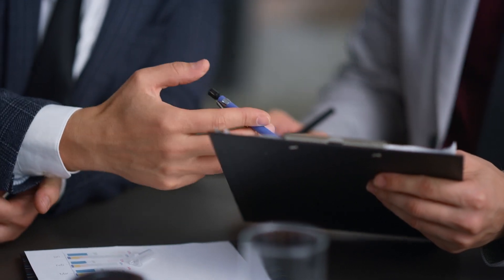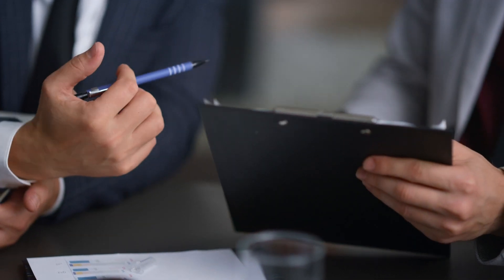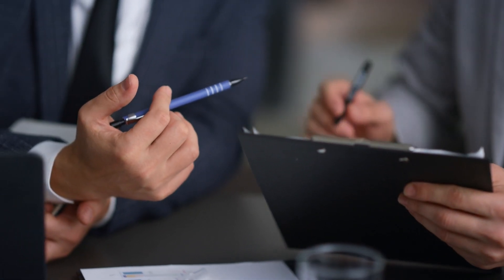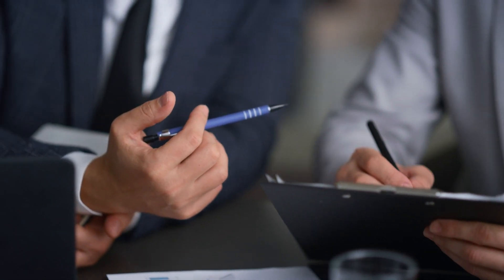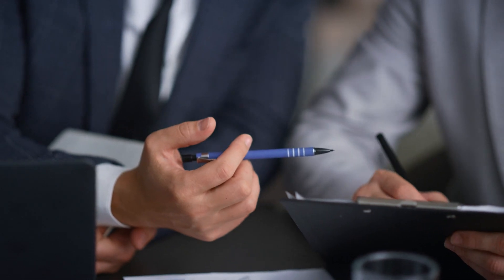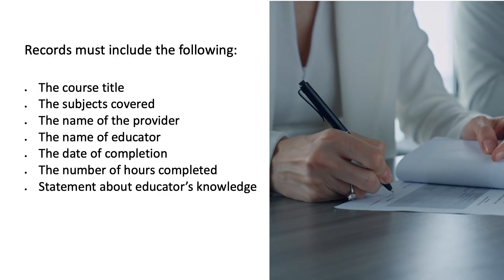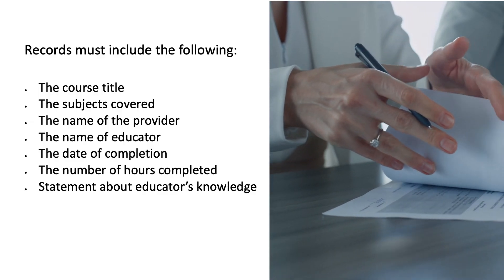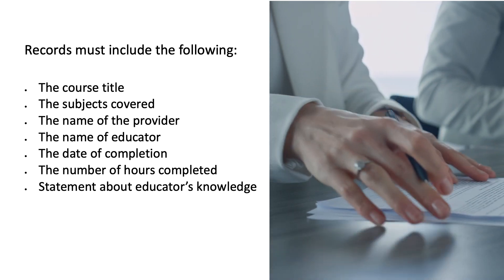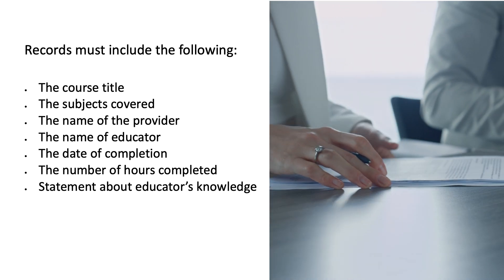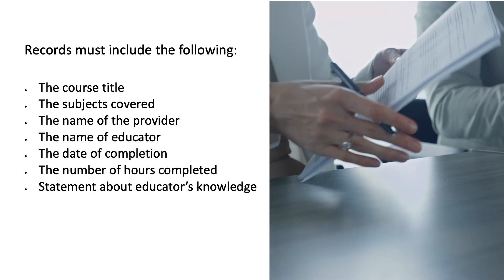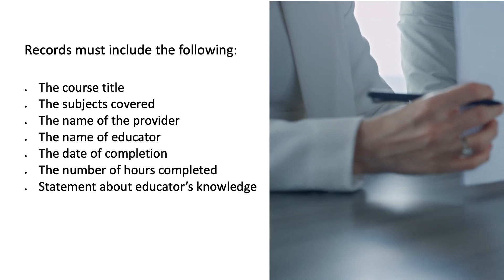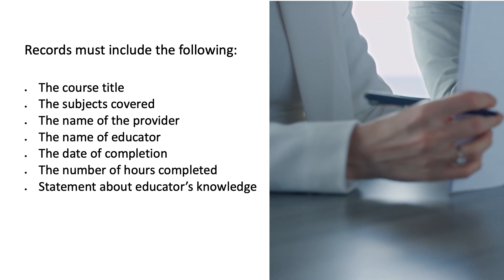What documentation should architects maintain in case of an audit by the California Architects Board? Architects must maintain records that document completion of the required coursework, such as a certificate of course completion or course transcripts, for at least two years after the renewal date.